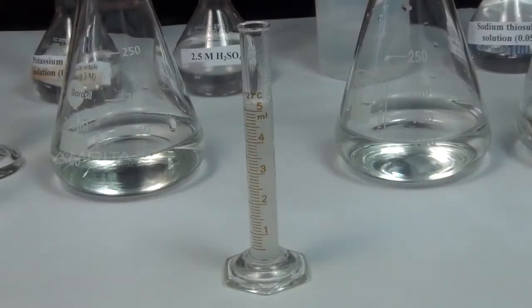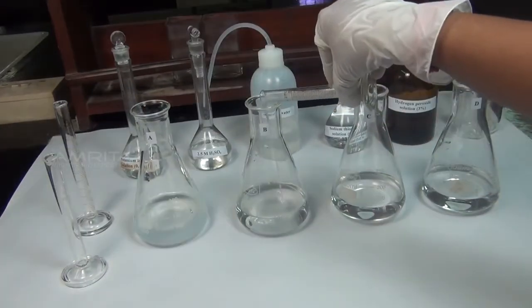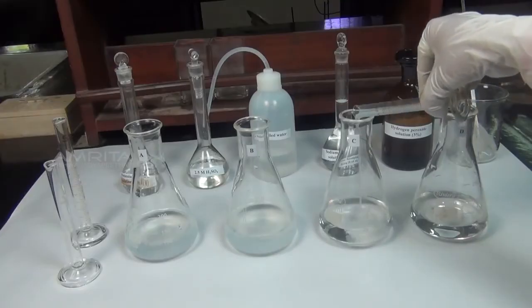Add 5 ml of starch solution to flasks A, B, C, and D using a measuring cylinder.